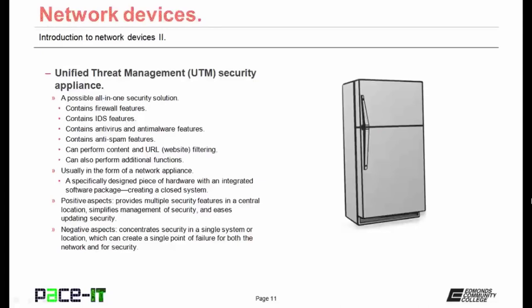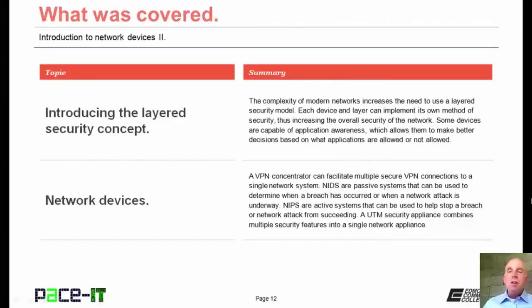A network appliance is a specifically designed piece of hardware with an integrated software package, creating a closed system. The positive aspects of the UTM include that it provides multiple security features in a central location, which simplifies the management of security. A negative aspect is that it can concentrate security into a single system, which can create a single point of failure for both the network and for security.